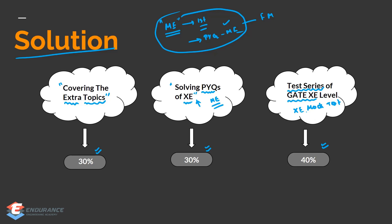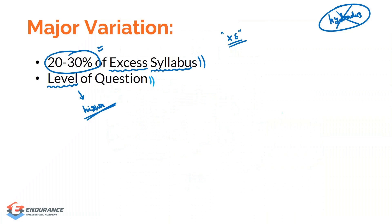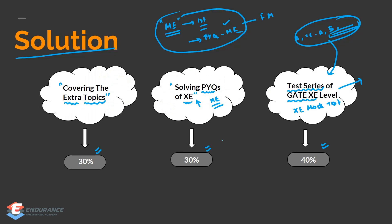XC mock tests are important because the mock test model itself is different. In XC, you need to select from four options like aptitude, XCA, XCB, and others, and you select two out of those. So you need to make sure you're taking XC-level mock tests where the question level is higher. This is how you overcome the two problems we discussed.